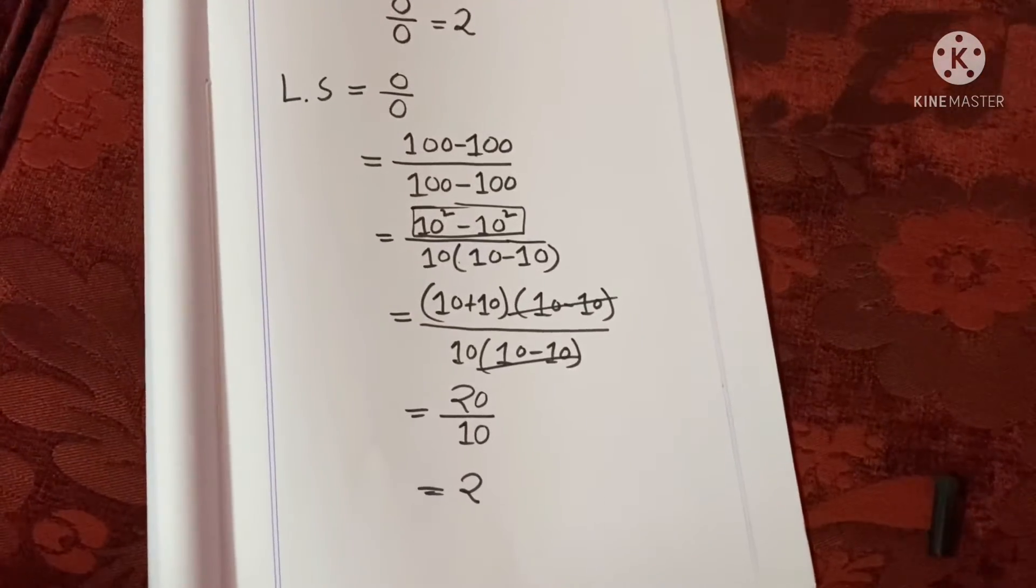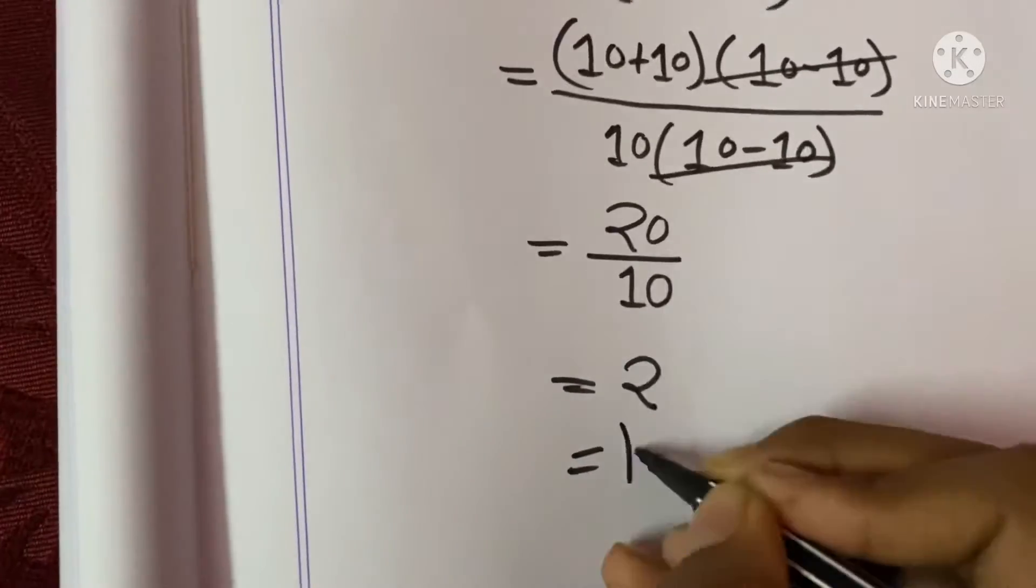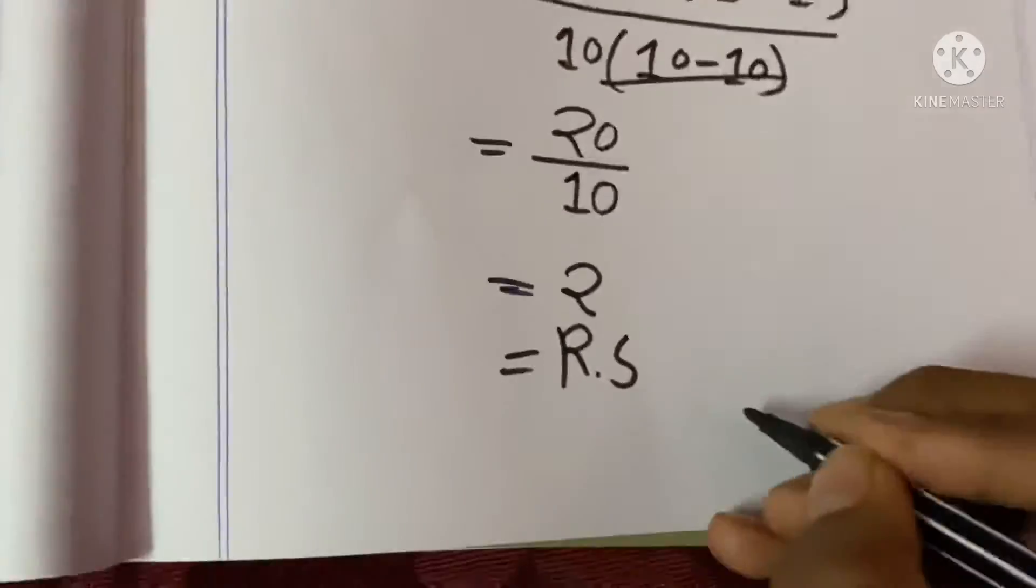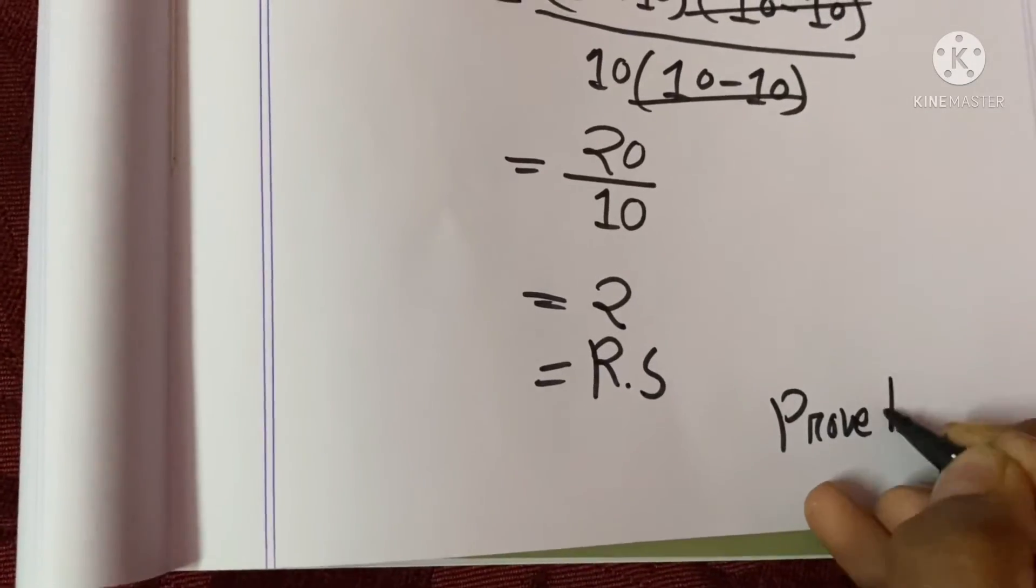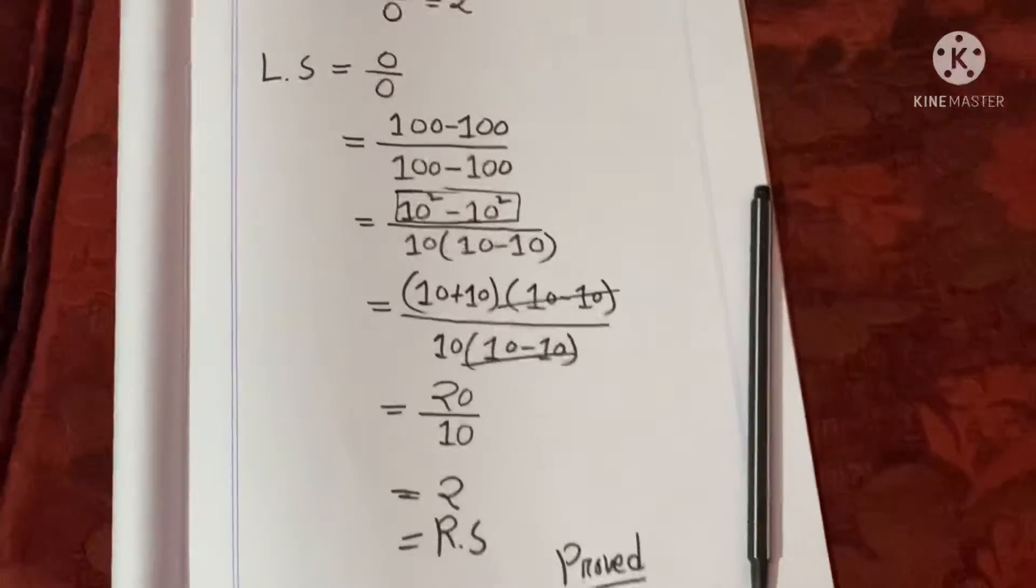0 divided by 0 equals 2, so that should be the R.S. (right side). So we can actually prove this funny little equation.